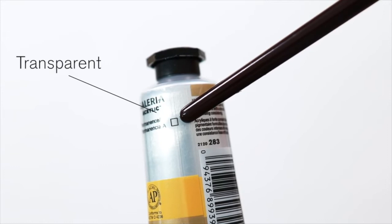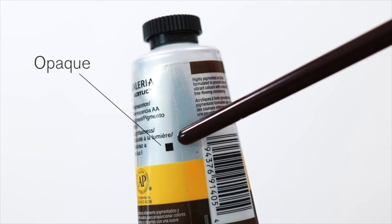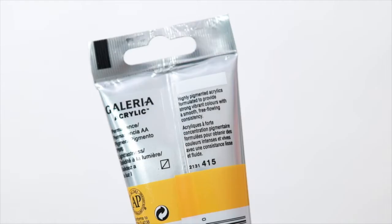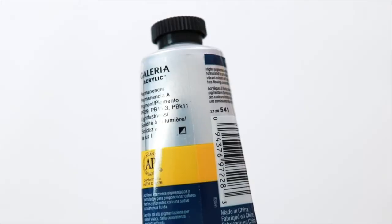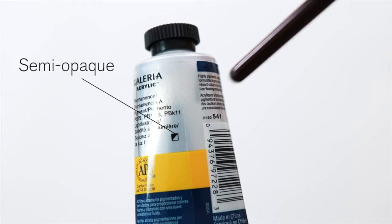If you see a white square, it means that this color is completely transparent. Black square means opaque. A white square with a dash means the color is semi-transparent, and a square which is half white, half black means it's semi-opaque.